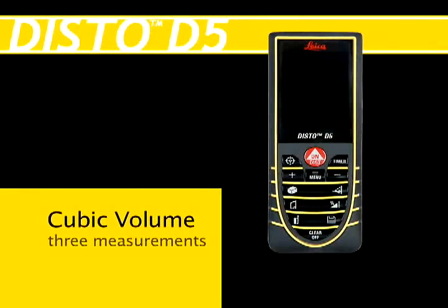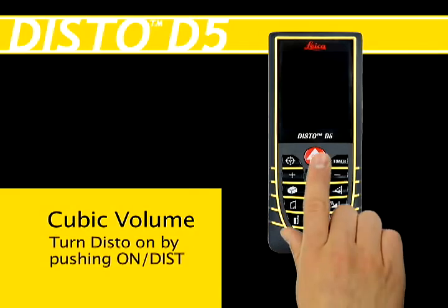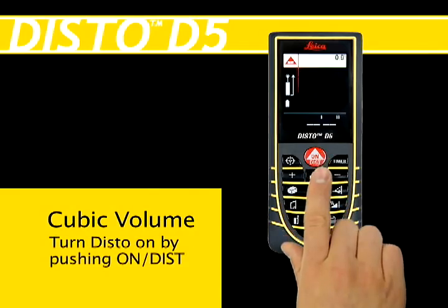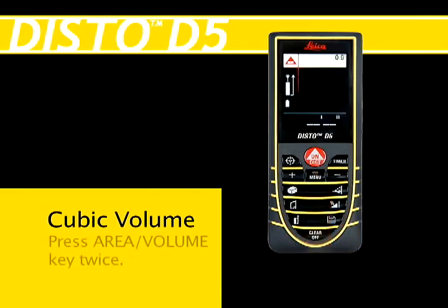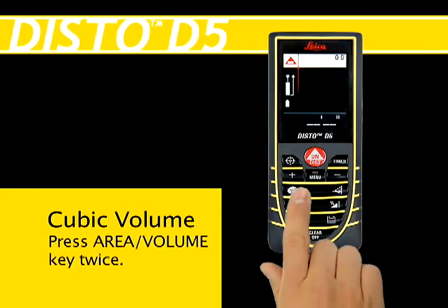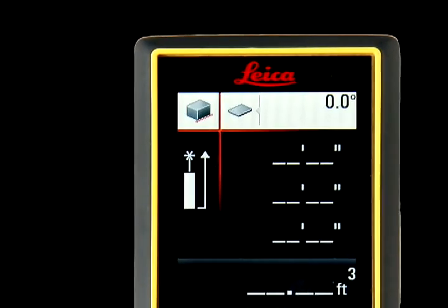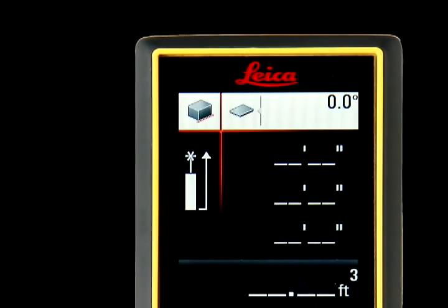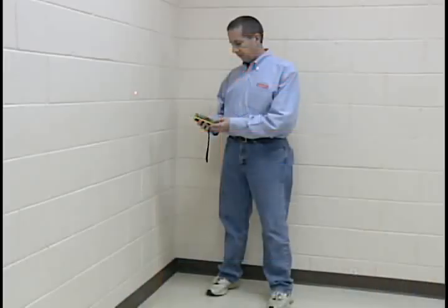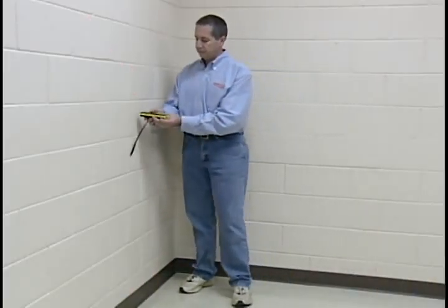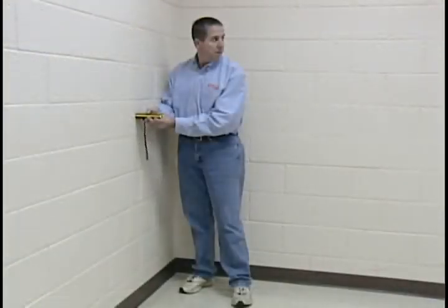To measure cubic volume using the DISTO unit, turn it on by pushing the dist red button at the top center of the keypad. Press the area/volume key twice — the third button down on the left — to activate the volume feature. The volume icon will appear in the upper left corner of the screen. Place the DISTO against the wall and visually locate the red laser spot on the opposite wall.